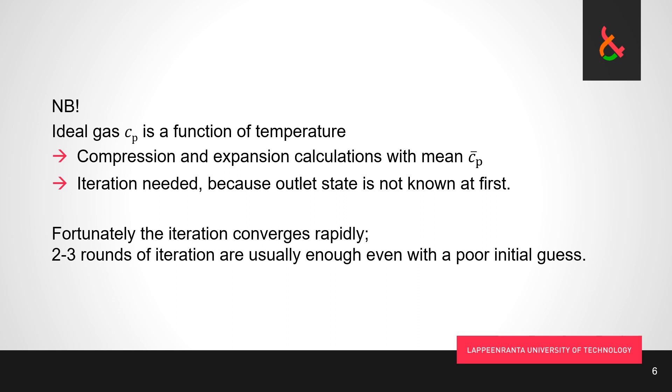It's an approximation anyway. You can either calculate first the inlet and outlet temperature, take an average temperature, take the c_p there, or you can read the c_p at the inlet temperature and then c_p at the outlet temperature and take the average of two c_p's. Either way, it's pretty much equally good approximation, so either one is as acceptable as the other.